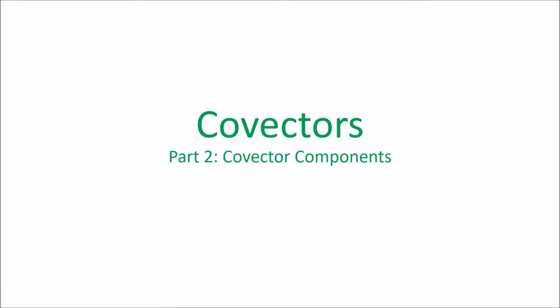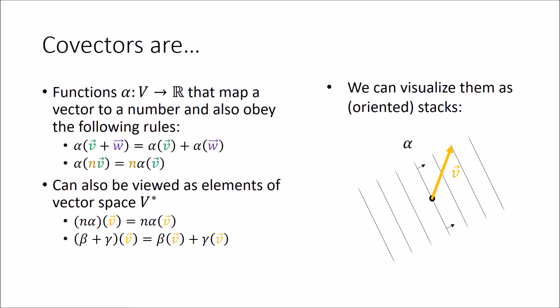We're continuing with our discussion of covectors. In this video we're going to talk about covector components. Just a quick review: covectors are functions that take vectors to produce numbers. These functions are linear and obey specific properties. These functions can be added and scaled in a meaningful way, and because of that they form a vector space called v star. Finally, we can visualize covectors as these oriented stacks of planes.